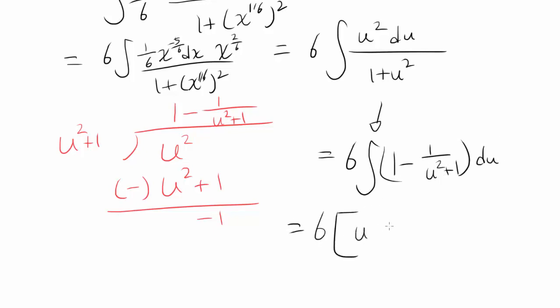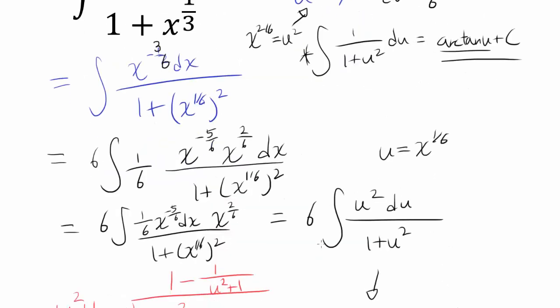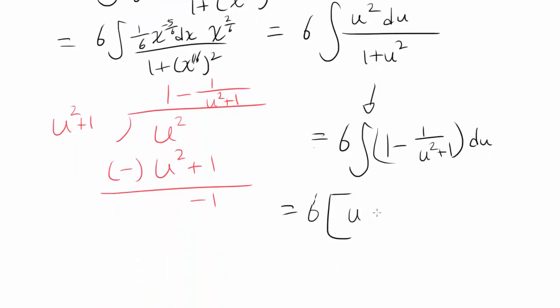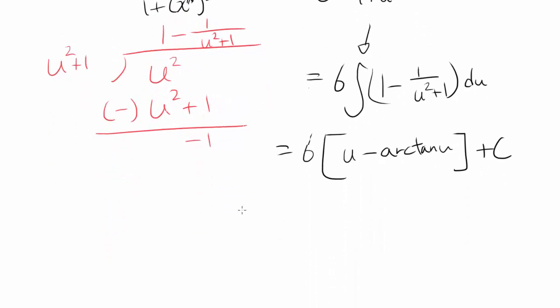Integrating 1 gets us u. Integrating 1 over u squared plus 1 as I mentioned before is precisely arc tangent of u plus c. So we have u minus arc tangent of u plus c and our u was x to the 1/6 power. So let's plug that in.